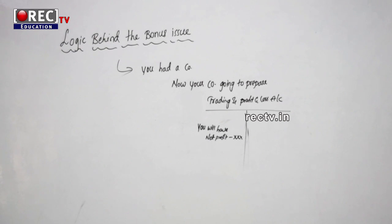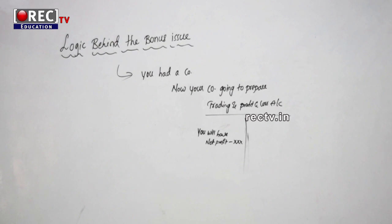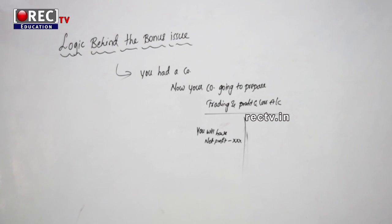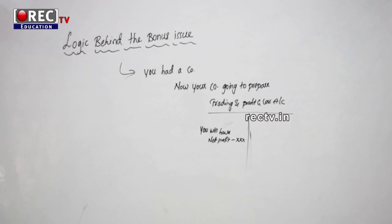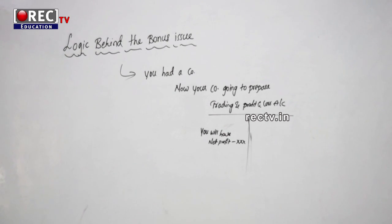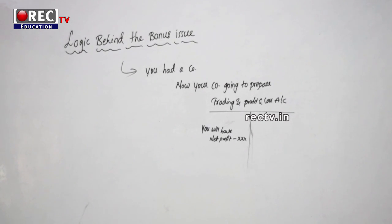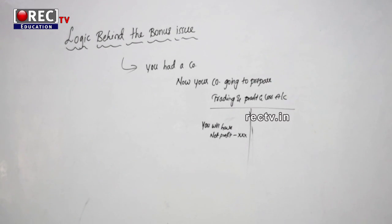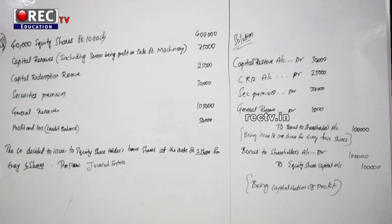So with this, we have completed four segments: meaning of bonus issue, conditions for bonus issue, source of bonus issue, and logic behind bonus issue. This is a small topic — accounting for bonus shares. Now let us see one problem, one question based on accounting for bonus issue.